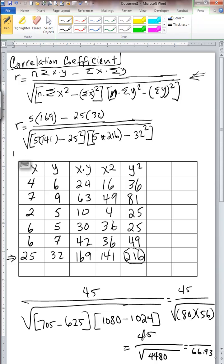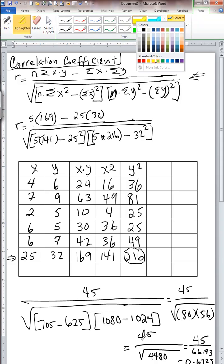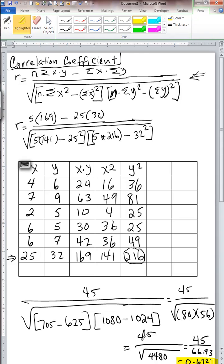And square root of that is 66.93. I'm rounding. So 45 divided by 66.93 is 0.6723, and that is our correlation coefficient.